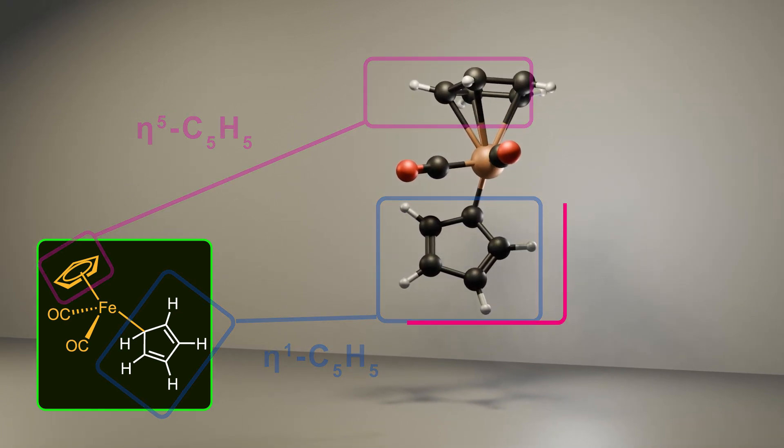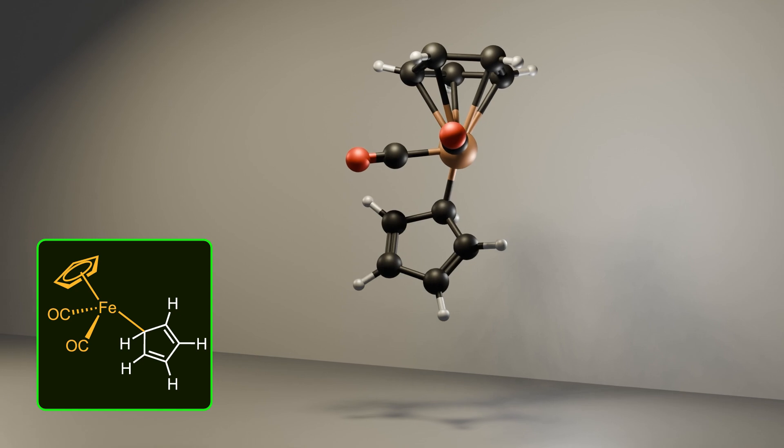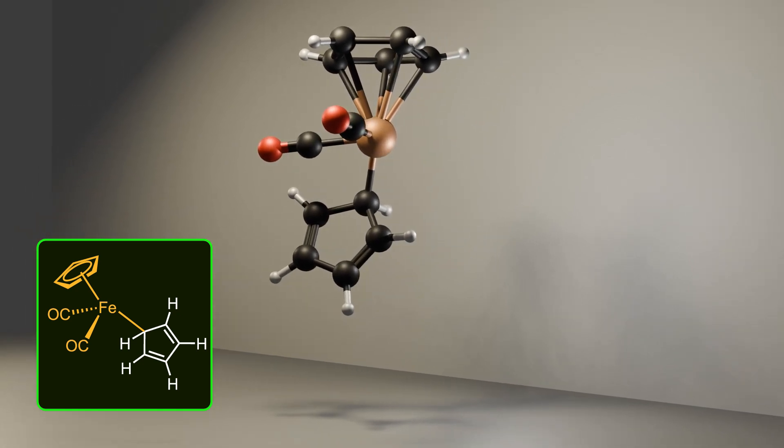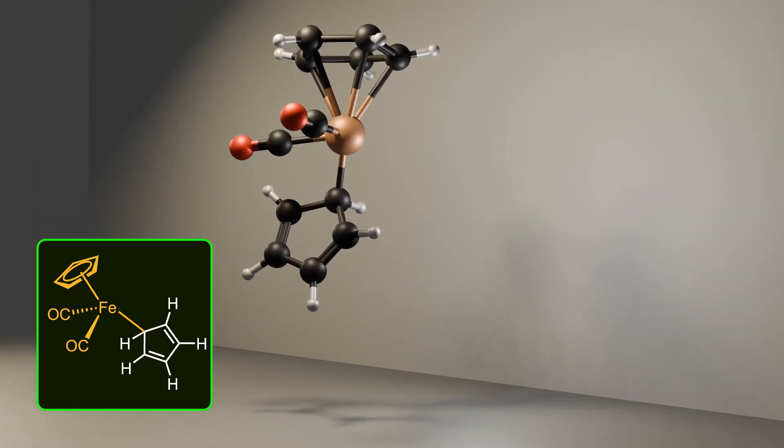Now focus on the cyclopentadienyl ring. At first glance, you might think there are three types of hydrogens: one attached to the alpha position of iron and two sets attached to the double bond. But experiments reveal that all the hydrogens are actually the same with no difference between them.